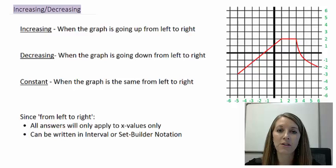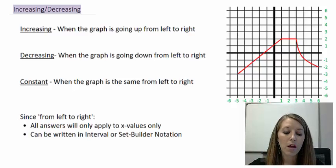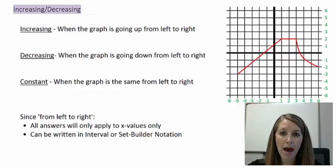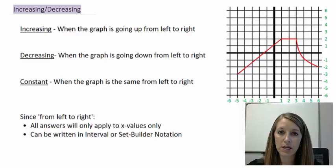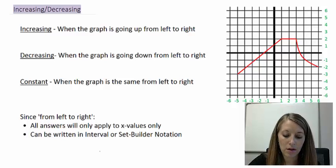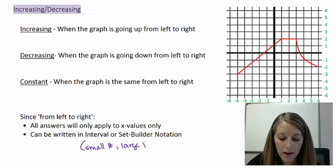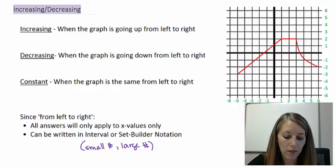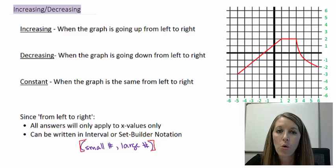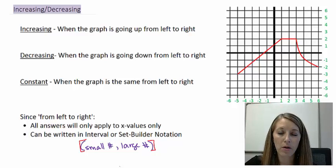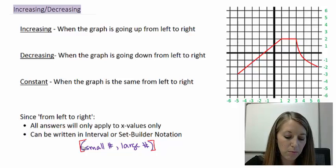On your homework, if it doesn't specify, you can use whichever notation you're more comfortable with. We've learned these notations back in Chapter R of College Algebra. They are either interval notation — where we have a small number to a large number — which can have parentheses, brackets, or a combination. Since we're talking about increasing, decreasing, and constant, all of our answers will only be open intervals.